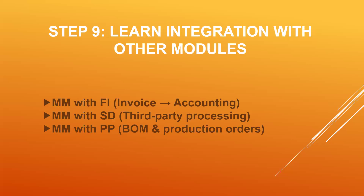Step nine: learn the integration with other modules. MM integration with FI, MM integration with SD, MM integration with production planning — all these three. The links have been provided in the description. MM with FI is valuation and account assignment. SD is third-party sales or individual purchase order. MM with PP — production planning: raw material will be sent to the production line and in turn it comes out as finished goods. All the raw materials will be combined together and it becomes finished goods. The link has been provided in the description.